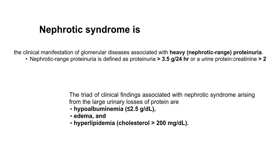Returning to nephrotic syndrome: it is the clinical manifestation of glomerular diseases associated with heavy proteinuria — that is more than 3.5 grams in 24 hours or a urine protein-creatinine ratio of more than 2. The clinical triad associated with nephrotic syndrome arising from large urinary losses of protein are hypoalbuminemia, edema, and hyperlipidemia.